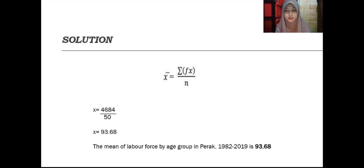We get 93.68. The mean of labor force by age group in Perak 1982 to 2019 is 93.68.